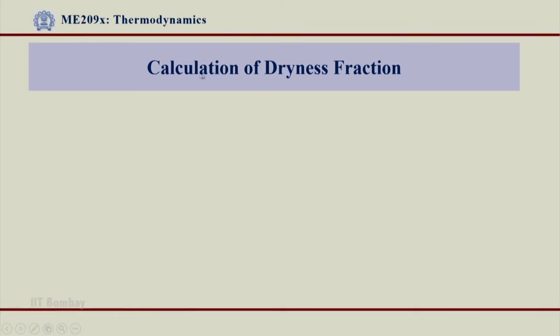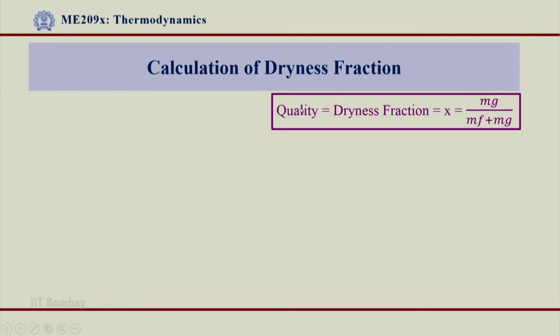Welcome back. Having understood the concept of dryness fraction, or the quality x that we calculated earlier, we had done the formulation of that. Let us now see how to calculate this dryness fraction. We know by definition the quality of the mixture is equal to dryness fraction, sometimes referred to as x, which is equal to the ratio of the mass of vapor to the total mass.